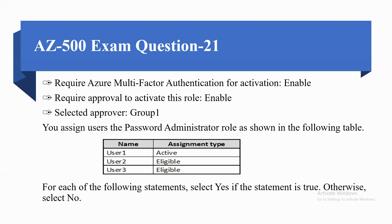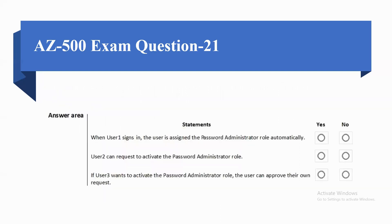You assign users the Password Administrator role as follows: User 1 is Active, User 2 is Eligible, User 3 is Eligible. For each of the following statements, select Yes if the statement is true, otherwise select No. Statement 1: When User 1 signs in, the user is assigned the Password Administrator role automatically. Statement 2: User 2 can request to activate the Password Administrator role. Statement 3: If User 3 wants to activate the Password Administrator role...